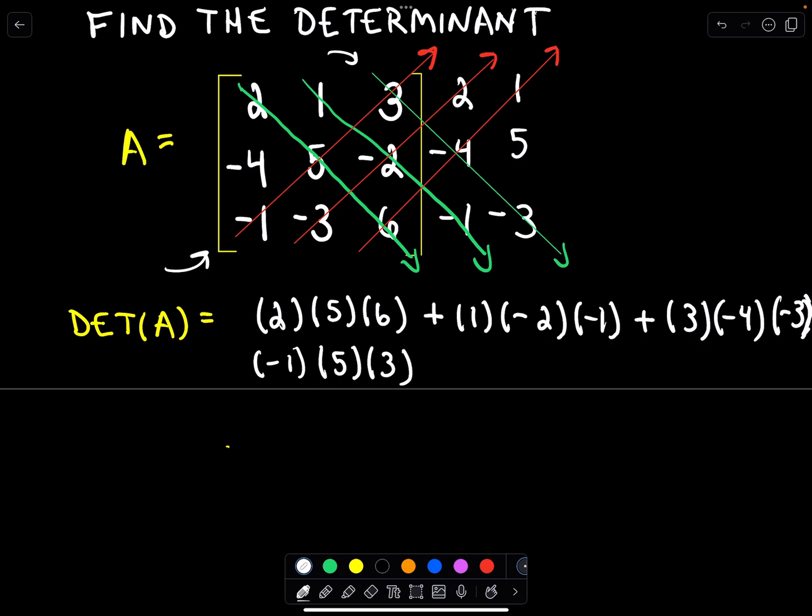And this is where we have to be careful, though. We had plus signs for our down arrows. For our up arrows, we're actually going to get negative signs in between. So we'll have a negative sign, a negative sign, and another negative sign.